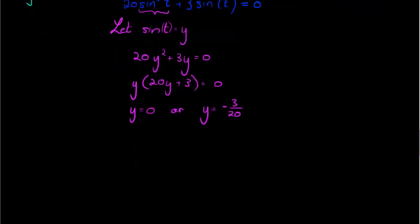I'm sure you can do that type of, these are the missing steps here already in your head. But y was nothing. Y was something we introduced. It didn't exist in the original equation. So we are going to replace it back with what it should be. It should be sin t. So either sin t is 0 or sin t is equal to negative 3 over 20.